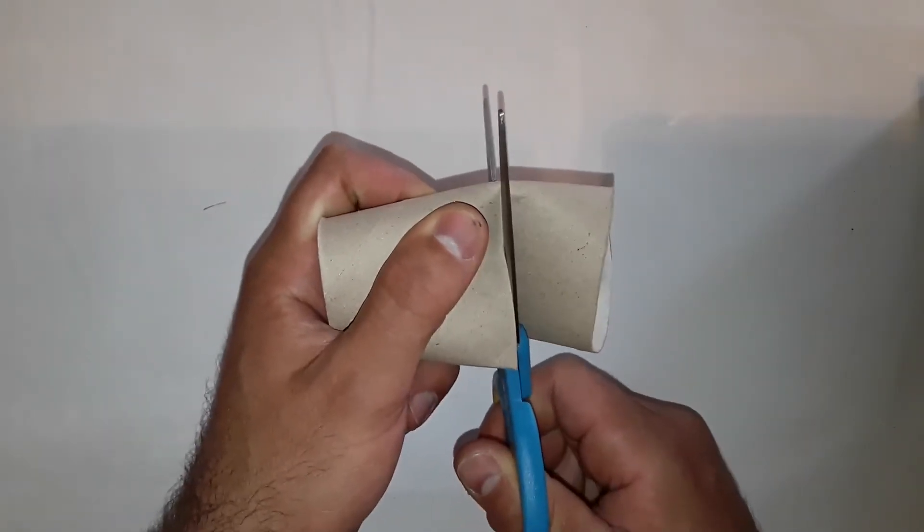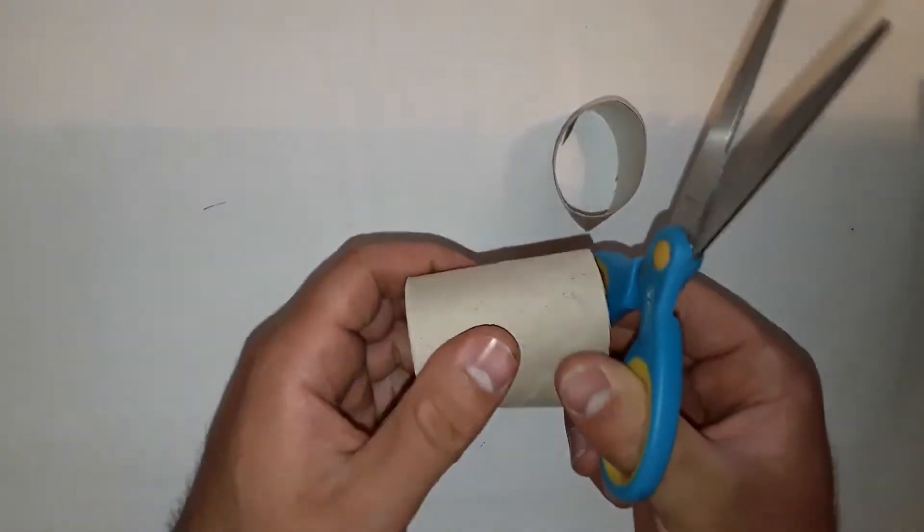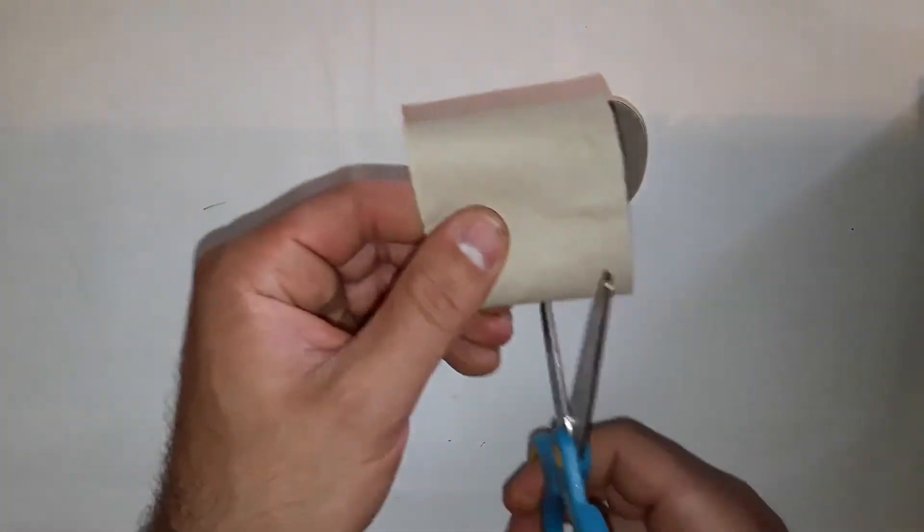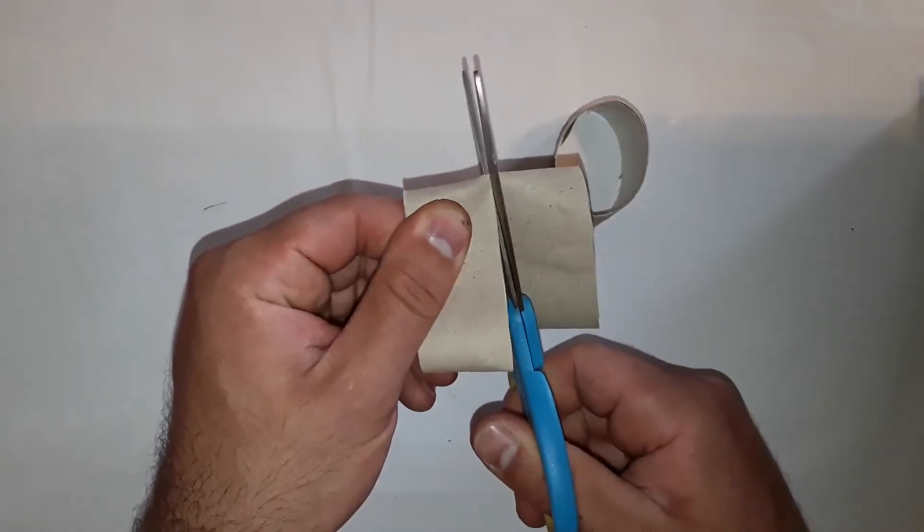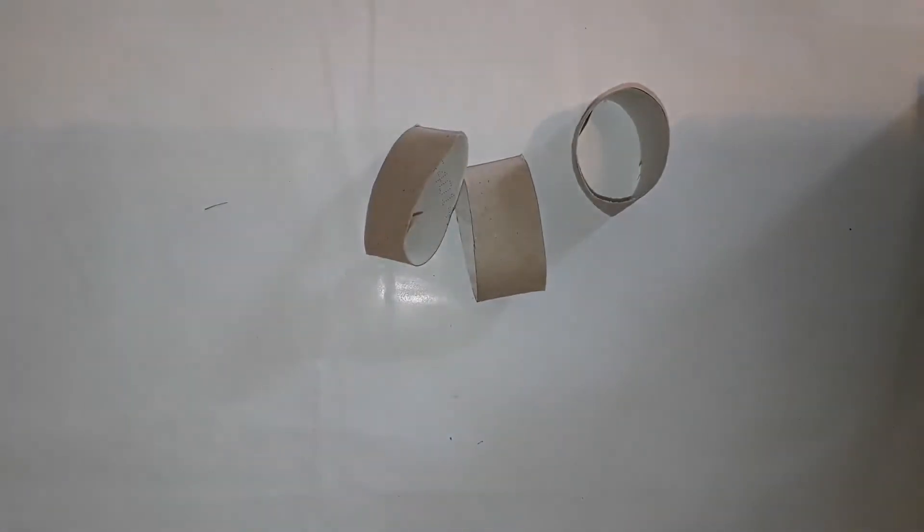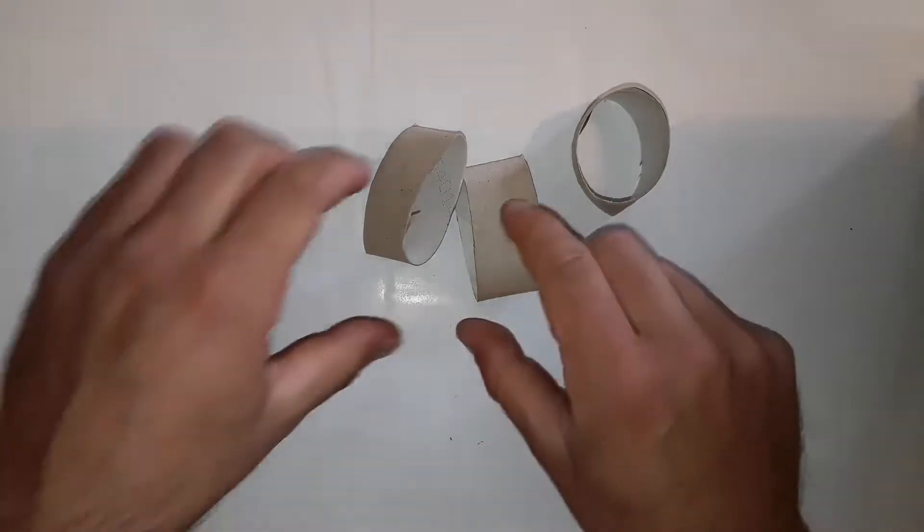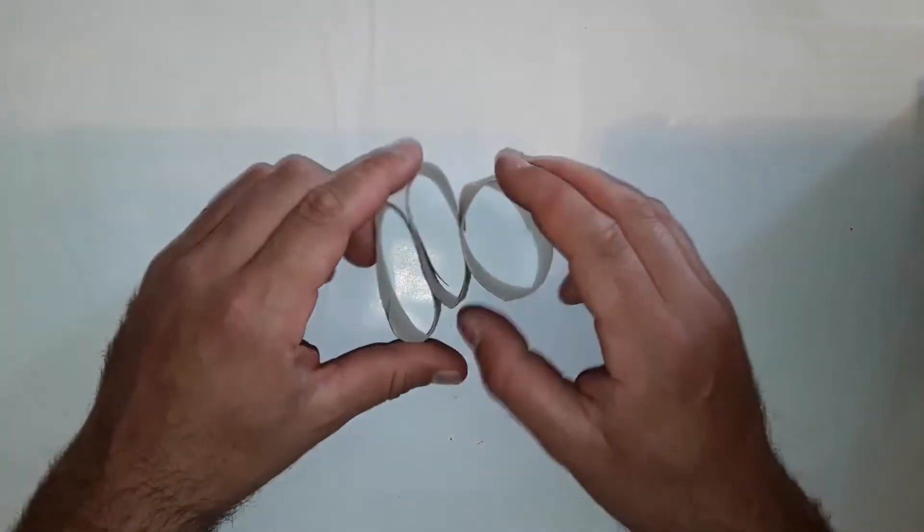It's best to try to cut as straight as possible. It's easier if you press the toilet paper roll flat, like I'm doing now. Then you'll have three such pieces.